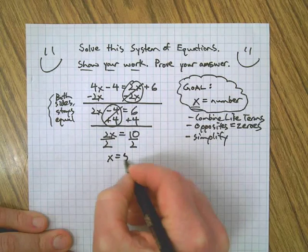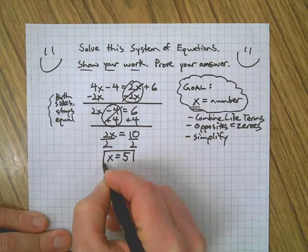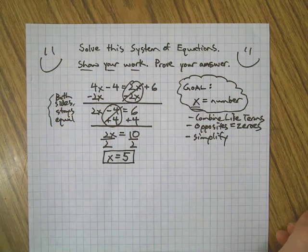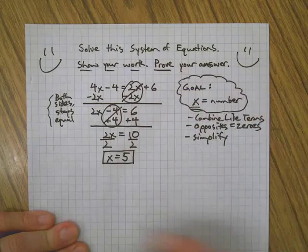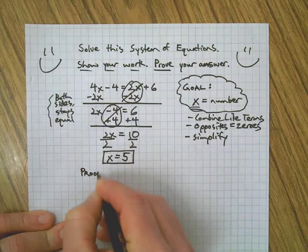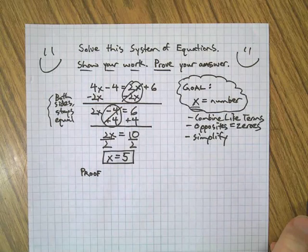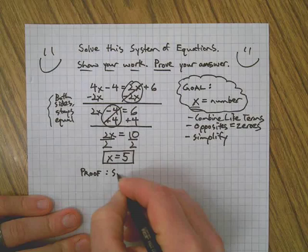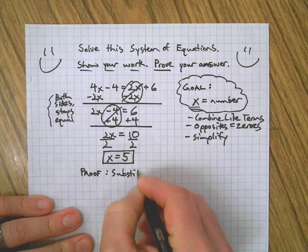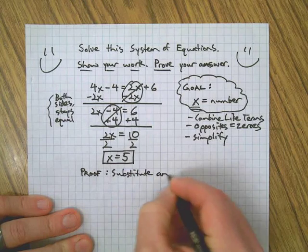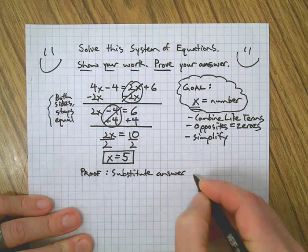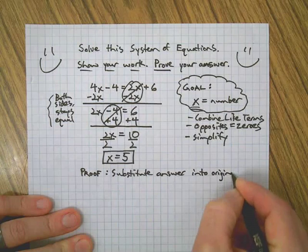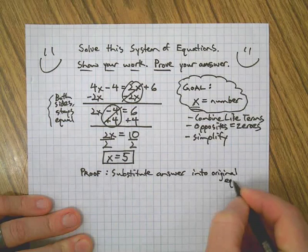So 2x divided in half, of course, leaves us with a single x, and 10 divided in half gives us 5. So there we have an answer, but that's just an answer. We don't know if it's right or wrong until we do a proof. Here's how you do that: a proof is just another word for checking your answer.